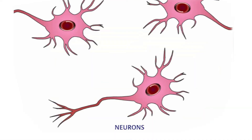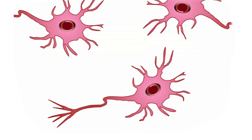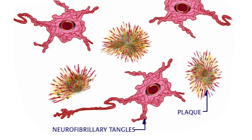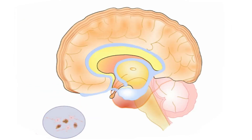The two structures in the brain that signal the presence of Alzheimer's disease are amyloid plaques, found between neurons in the brain, and neurofibrillary tangles, found within neurons in the brain. Both are clusters of proteins and can form as part of the usual process of aging.